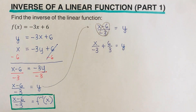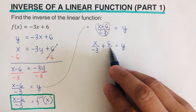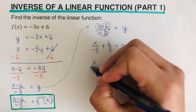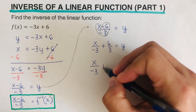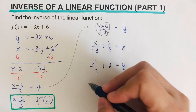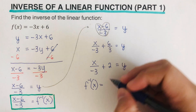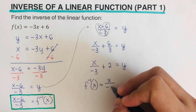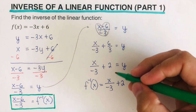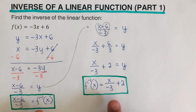Since 6 divided by 3 is 2, we can rewrite this as x / -3 + 2 = y. Applying the third step, we express this as f⁻¹(x) = x / -3 + 2. This is another way of writing the inverse.